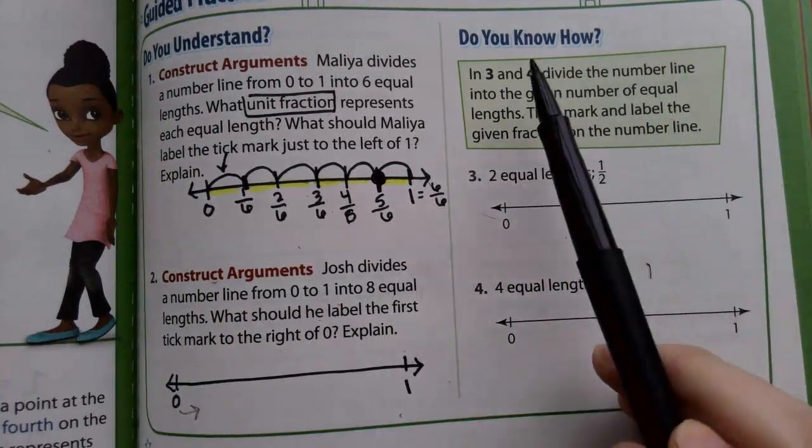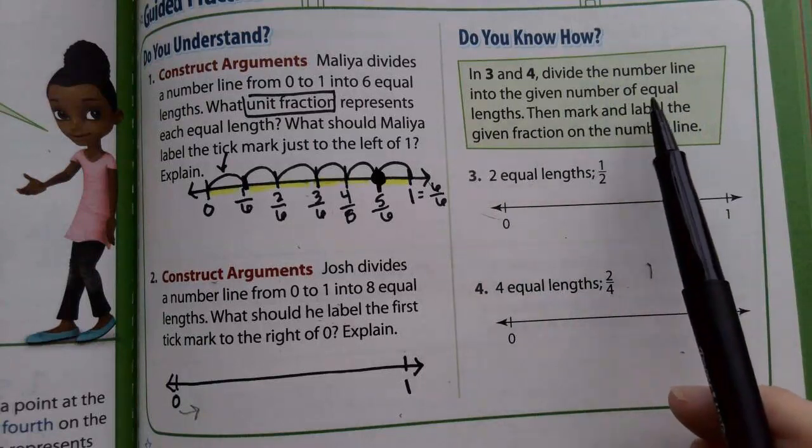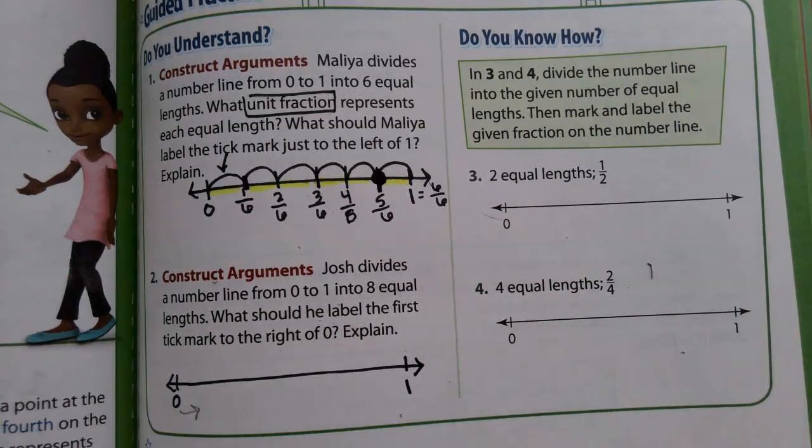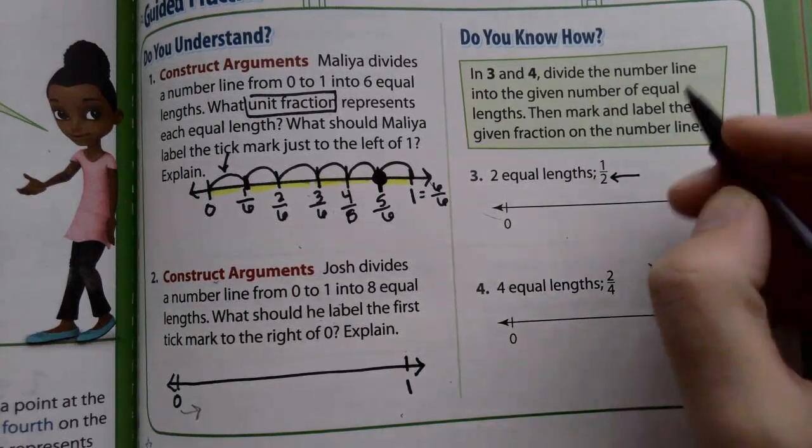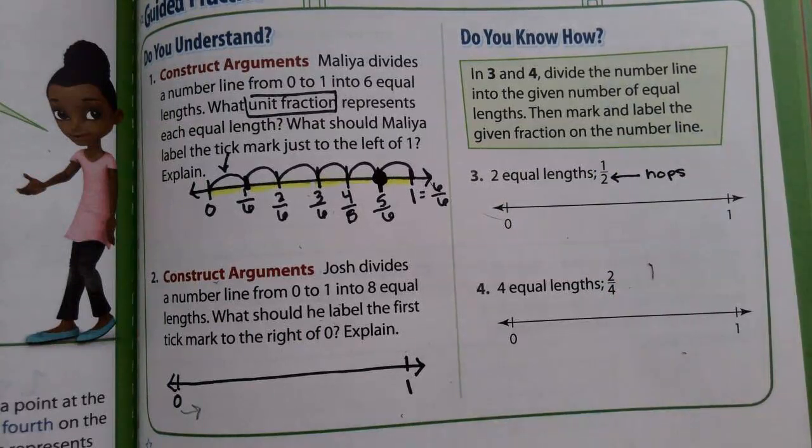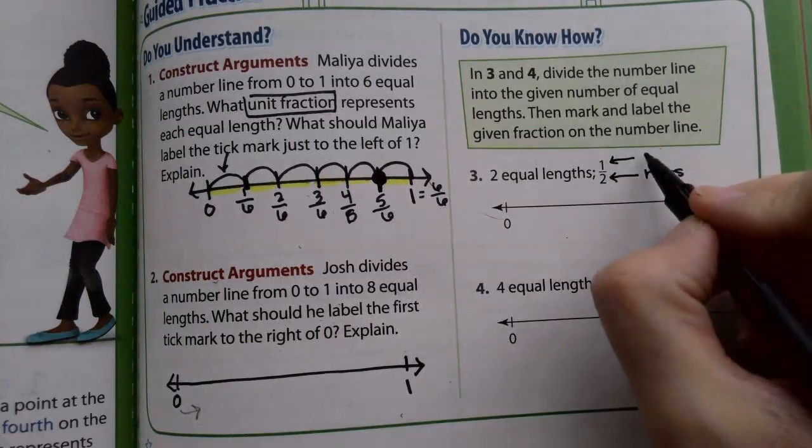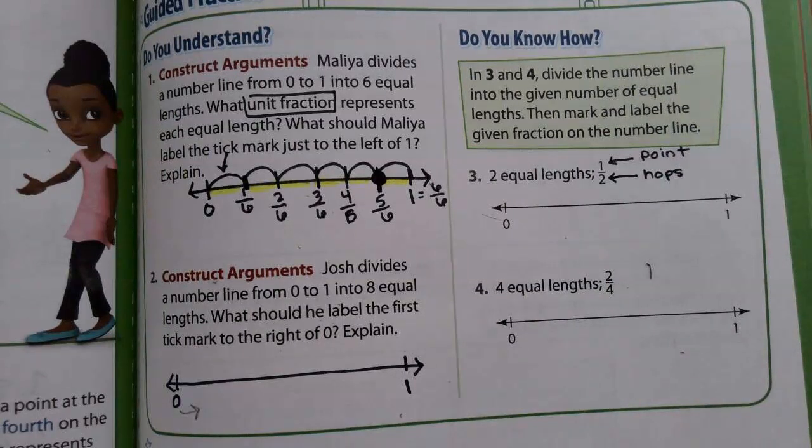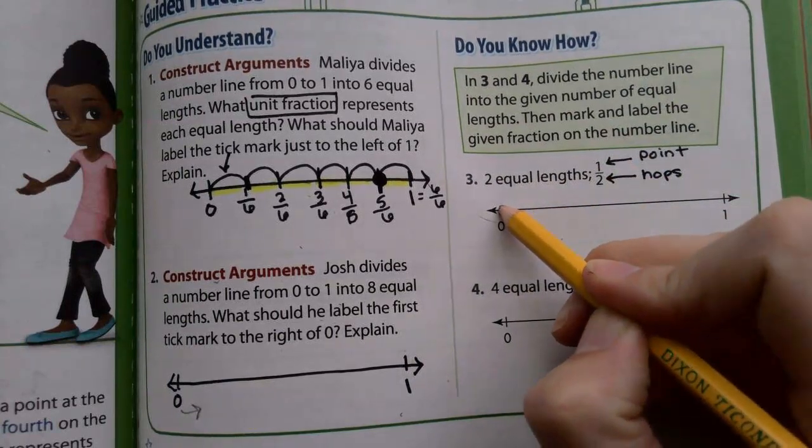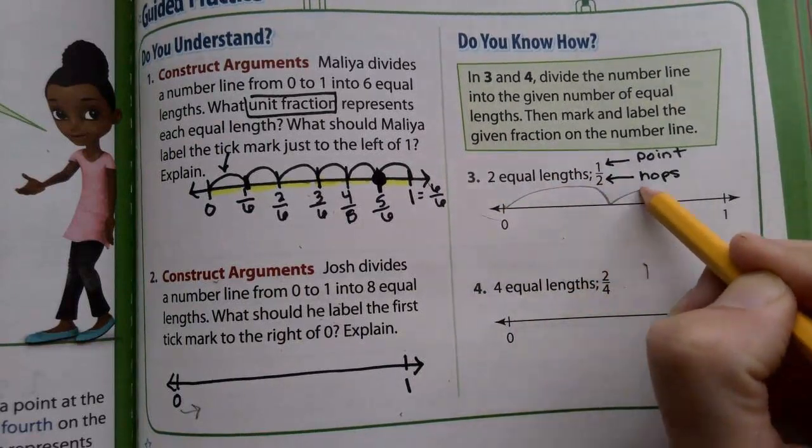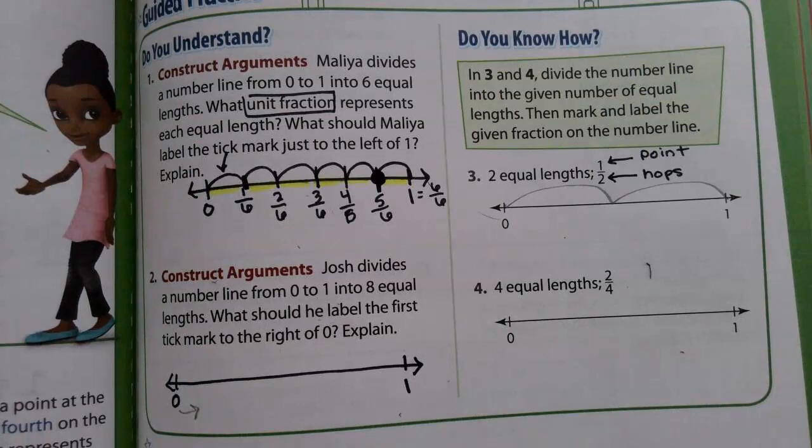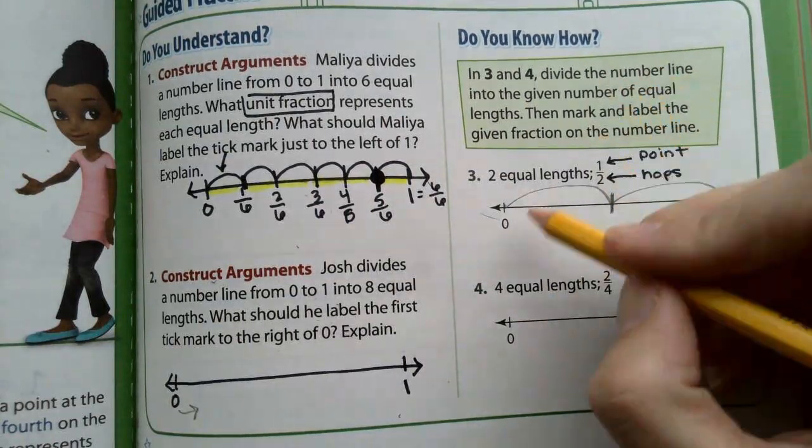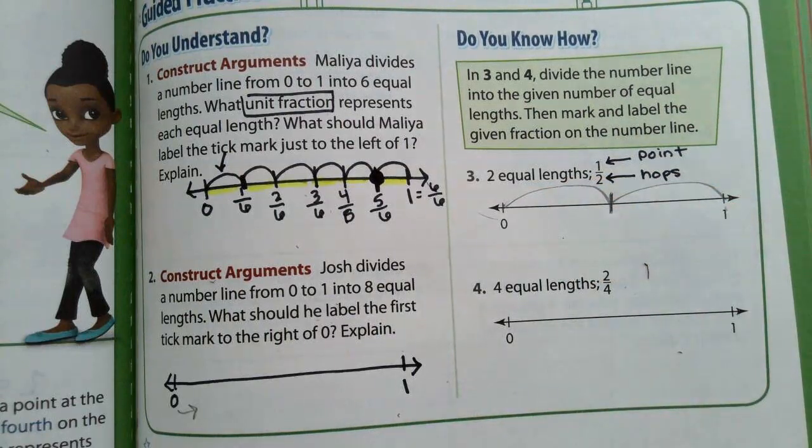Let's look at Do You Know. In 3 and 4, divide the number line into given number of equal lengths. Then mark and label the given fraction on the number line. So this tells me, I'm going to look at the denominator first. That's how many hops I need. And this is where my point is going to go. So let's start off with our 3 steps. Step 1, start on 0 and make your hops. I need 2 hops. 1, 2. You need to redraw it, erase and redraw.